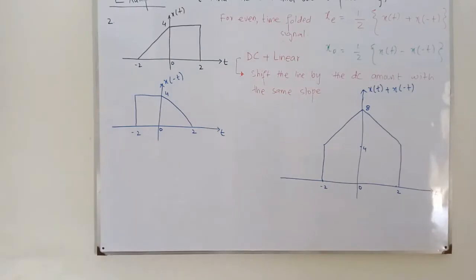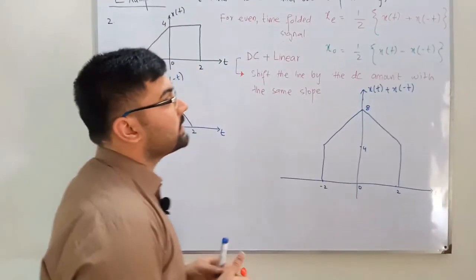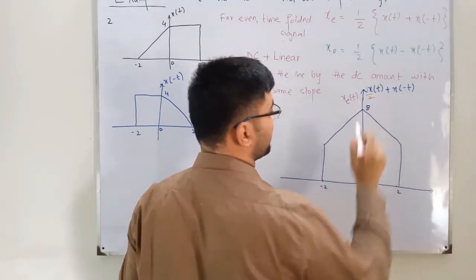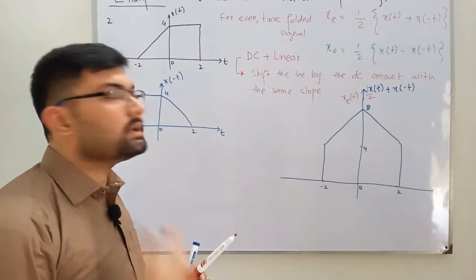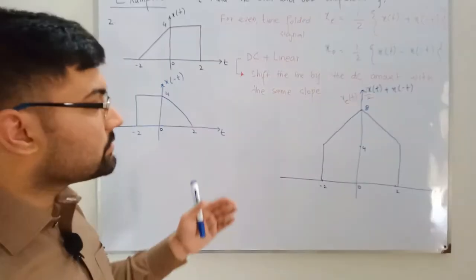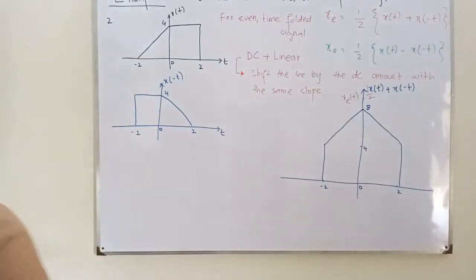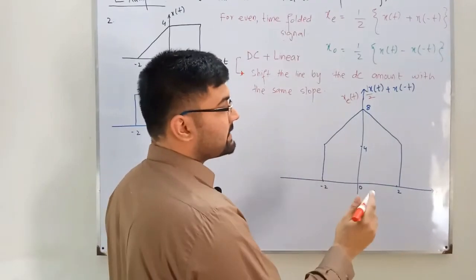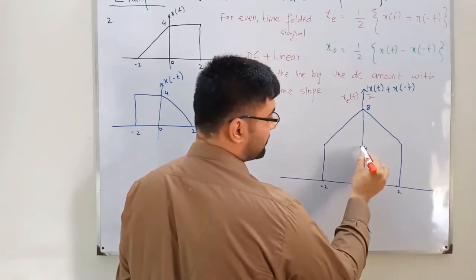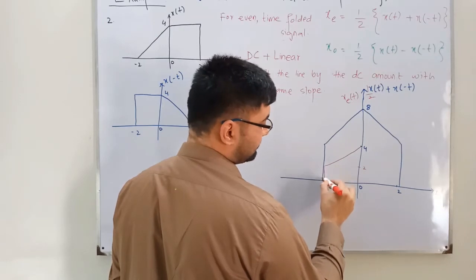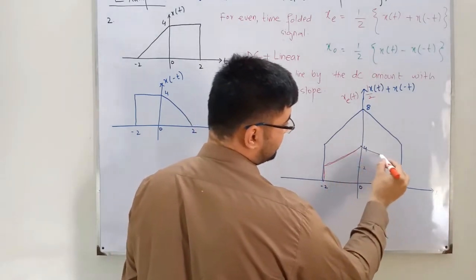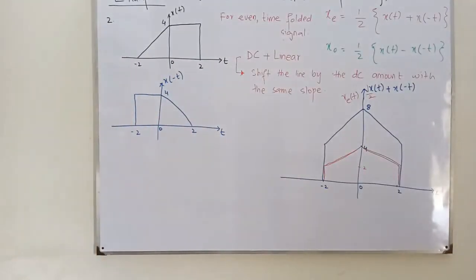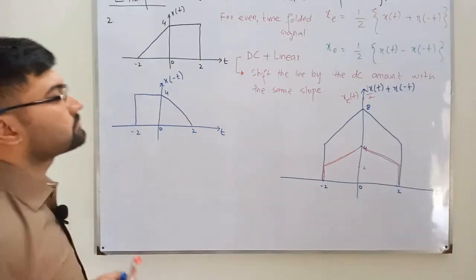For the even component we multiply by ½, which halves all amplitudes. So the signal that ran from 4 to 8 now runs from 2 to 4. This red-colored graph represents the even component x_e(t) of the given function.